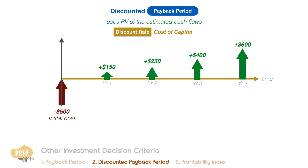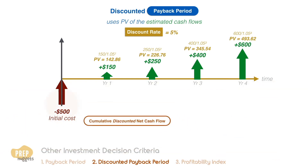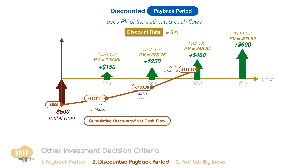Back to our example — we just need to discount all the future values to their current values. If the cost of capital of the firm is 5%, then these are the present values of the cash flows. Calculating the cumulative discounted net cash flows, we get this series of figures. Likewise, the discounted payback period is the point where the cumulative hits zero.